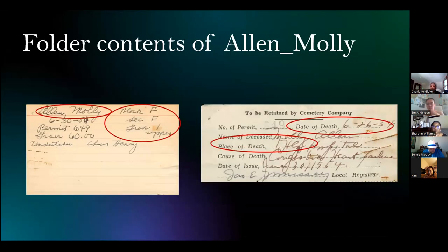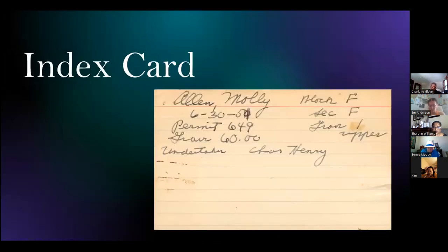This is the contents of the folder of Molly Allen. It contains just two documents, but they have all the information that you will need to create the memorial, as indicated by the red circles. All folders should have an index card with similar information. This one, and most of the index cards, have the first and last name, an unspecified date, a permit number, and a cemetery plot number. There's other information, but it varies and you'll probably not need it to create your memorial.